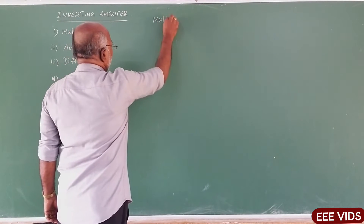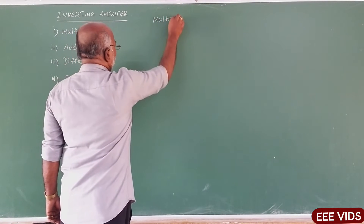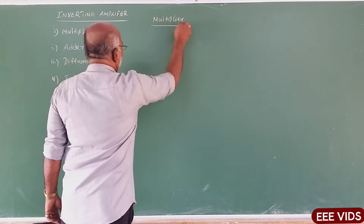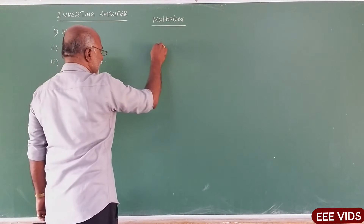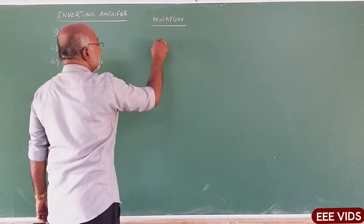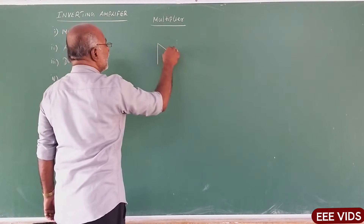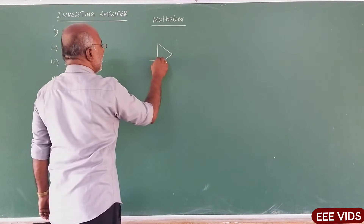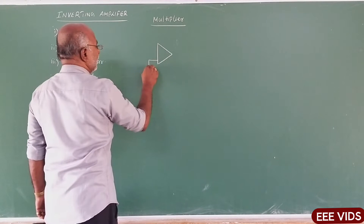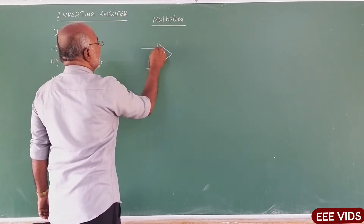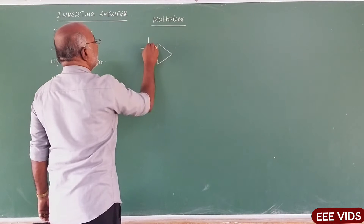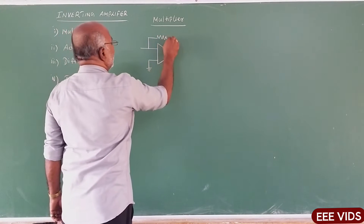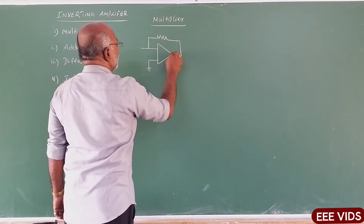So, multiplier circuit — output. From the name itself, the output is the multiplication of the given input. Multiplication of work. So, it is the inverting amplifier circuit.